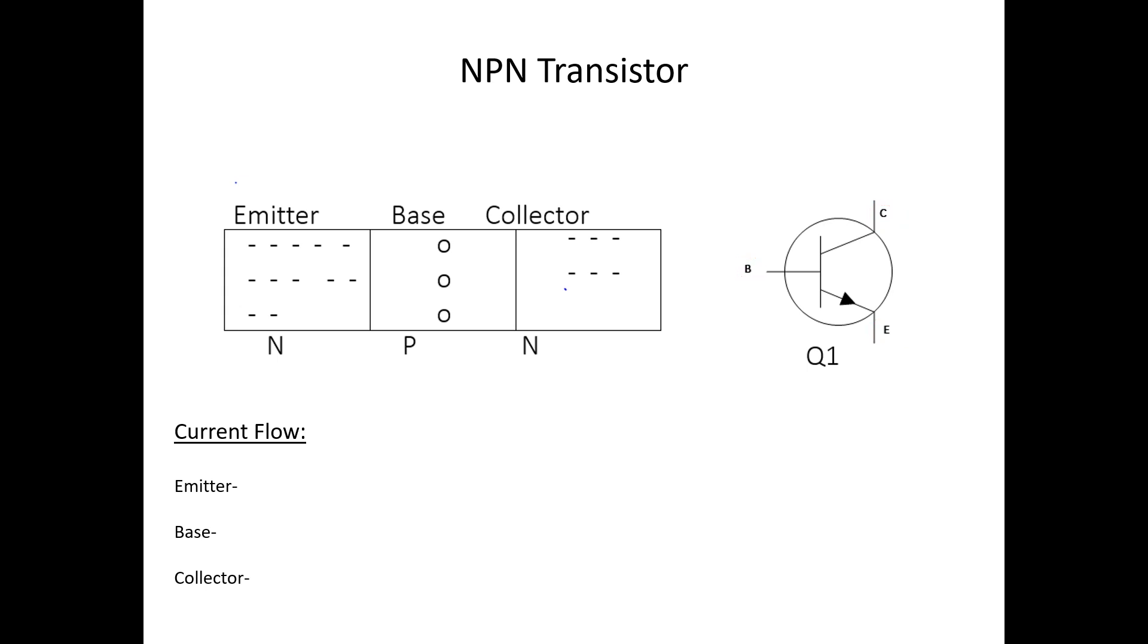Because there are only two PN junctions, each terminal is doped in semiconductor material slightly different. The emitter is going to be heavily doped in N-type material, or electrons. The base, thin and lightly doped in P-type material, or holes.